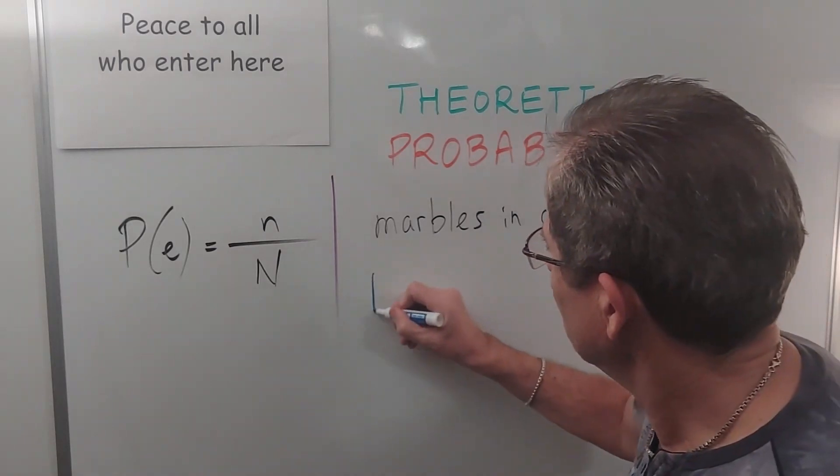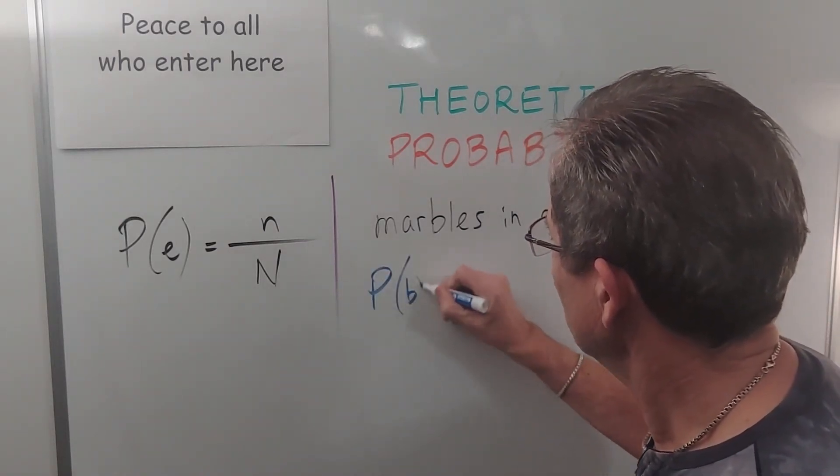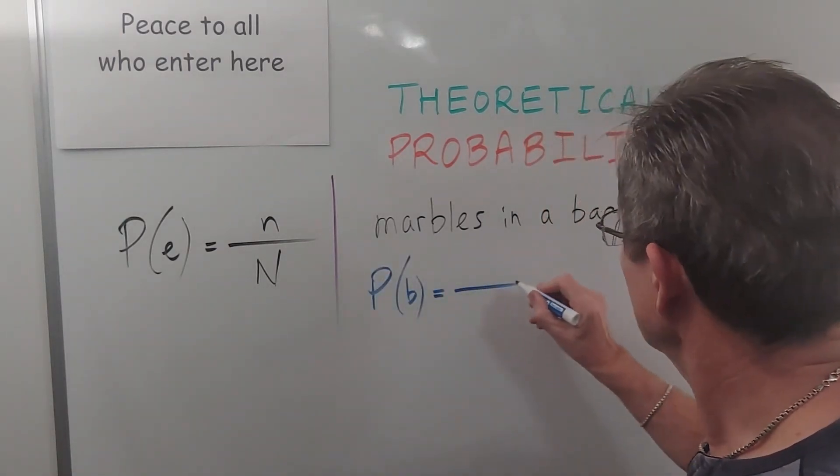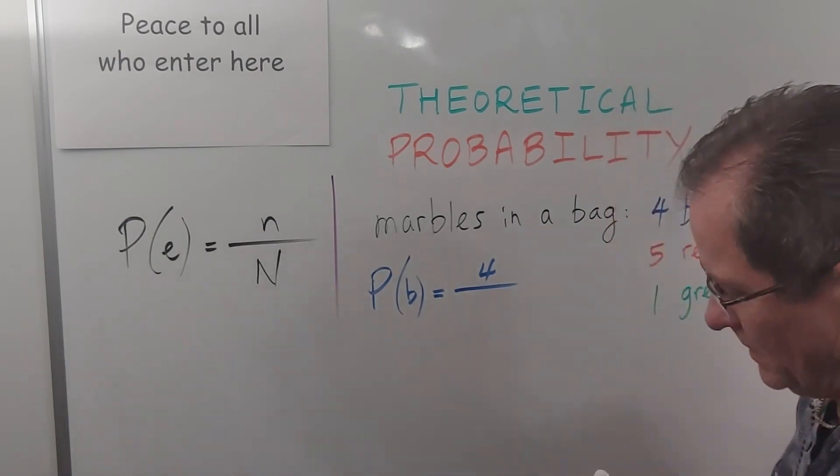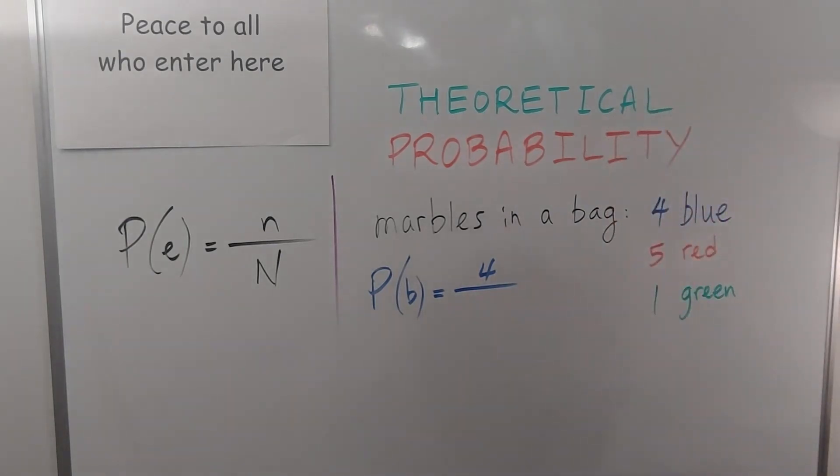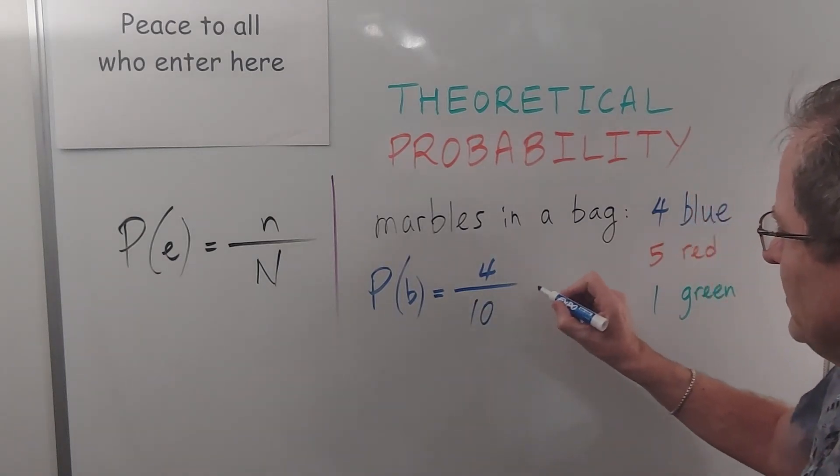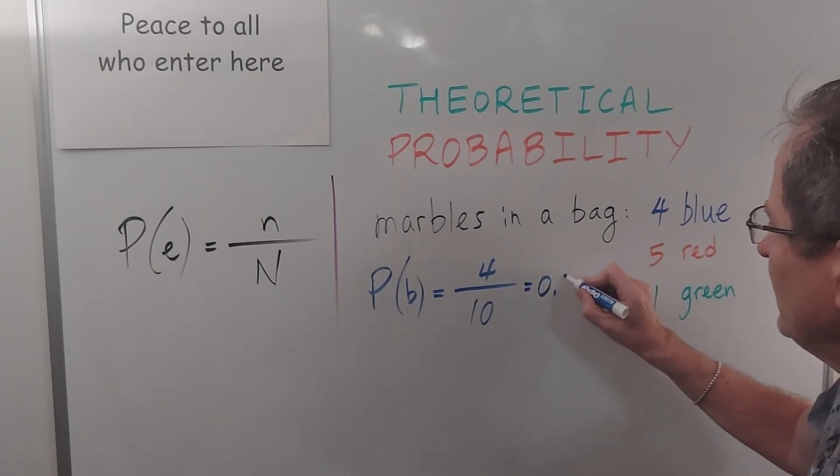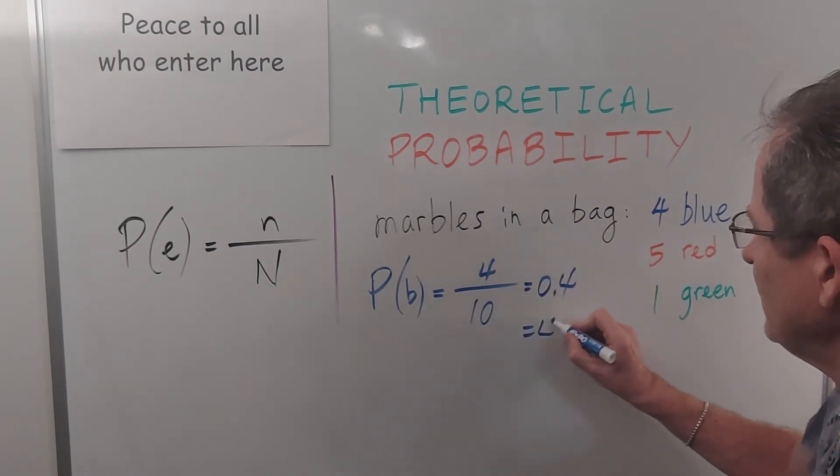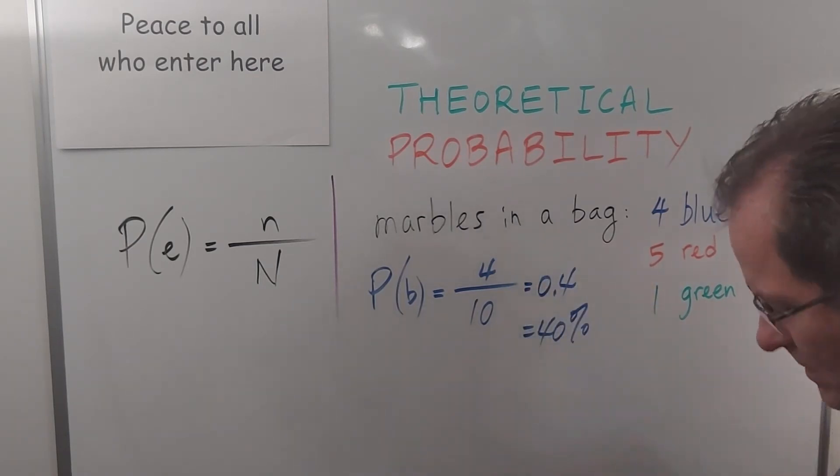What's the probability of getting blue? Well, there are four blue ones and if you do a quick addition, four plus five plus one, there's ten possible marbles in the bag. So that's again 0.4 or 40%.